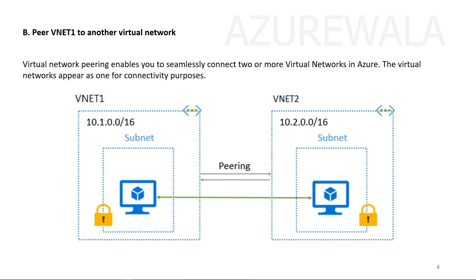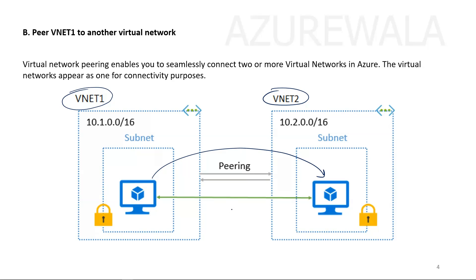Option B: Peer VNet1 to another virtual network. Network peering is helpful when we have two virtual networks to be connected together, so the resources in virtual network one can communicate with virtual network two resources. However, our requirement is for the web application to communicate with a resource available in a virtual network, so this is not the correct answer.